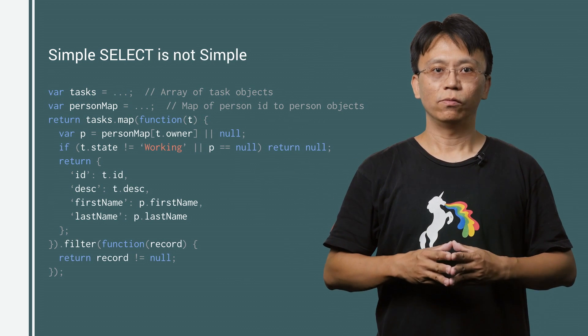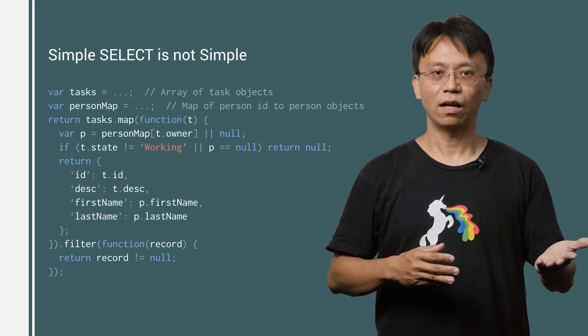How shall we do this in our shiny new JavaScript web app? Let's forget about the code that reads data out of index.db. Let's just concentrate on the select logic.